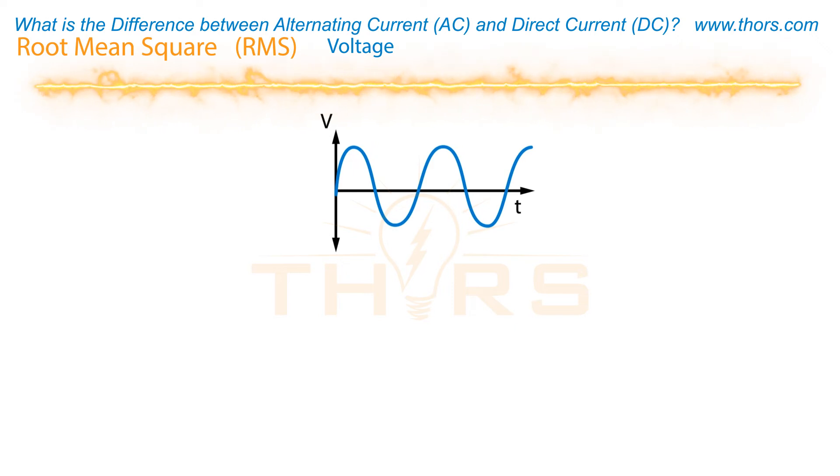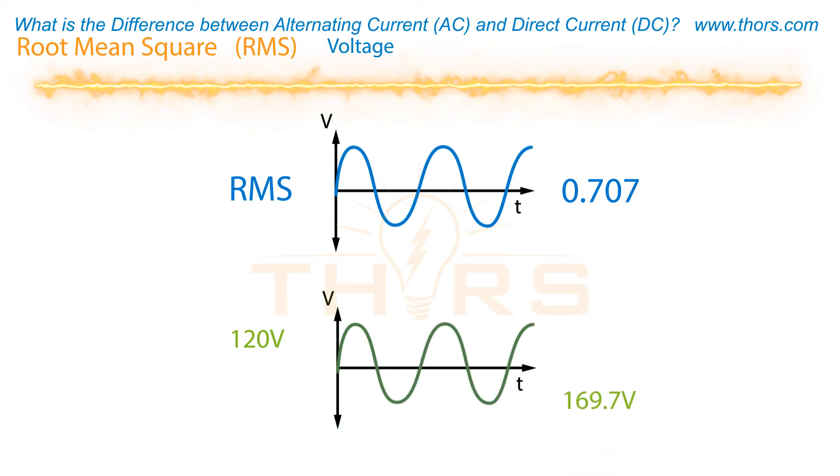Because AC waves constantly fluctuate, it is more practical to simply provide the RMS when communicating power. The RMS of a sine wave is approximately 0.707 of the sine wave's peak. So, a 120 volt power system actually reaches nearly 170 volts at its peak.